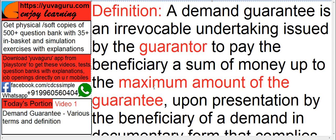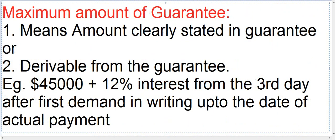What do you mean by maximum amount of guarantee? It means the amount should be clearly stated in the guarantee — like $45,000 only. Or it should be derivable from the guarantee. Derivable means: $45,000 plus 12% interest from the third day after the first demand in writing up to the date of actual payment. Both things are very clear — where it starts, up to what date, and what the rate of interest is. So it should be clearly derivable; none of the things should be ambiguous. That is the meaning of maximum amount of the guarantee.